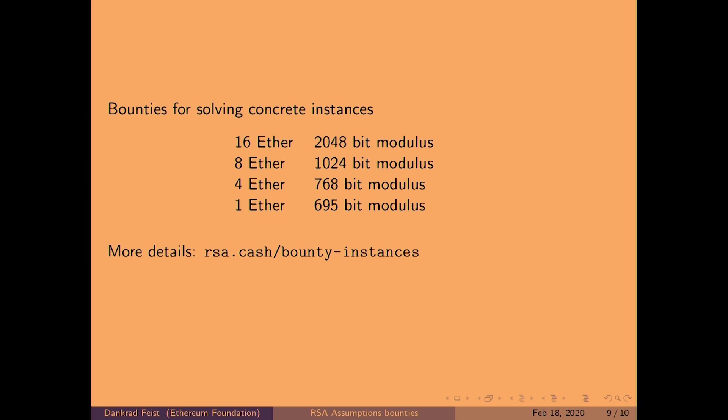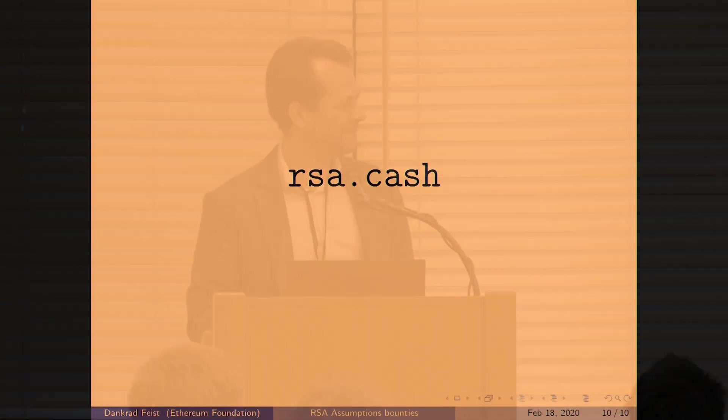You can win up to 16 ETH if you can solve that for a 2048-bit modulus. If your algorithm isn't quite that good yet, you can also try one of the lower moduli. If you solve all of them, you get the sum — you can get up to 29 ETH. Please have a look at RSA.cache — there's a summary of all those bounties.